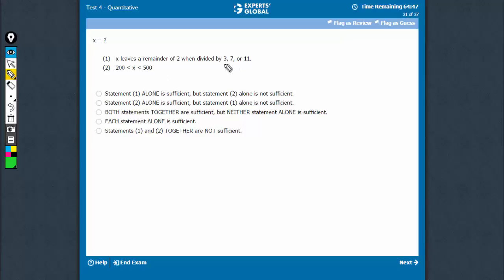So, x leaves remainder 2 with 3, 7, or 11. Therefore, x has to be a multiple of 3, 7, 11 and 2 added to it.